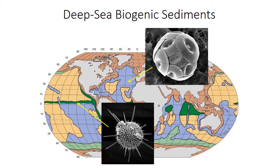The deep sea, which is really everything other than the continental shelves, accounts for maybe around 90% of the total ocean area, but we're only going to spend one lecture on it. It's perhaps a little unfair, but there's a lot more variation in coastal depositional environments. So this video covers the composition, the formation, and the preservation of biogenic, or biologically produced, sediments in the deep ocean. We'll focus primarily on the two main types of biogenic sediment: calcium carbonate and silica.